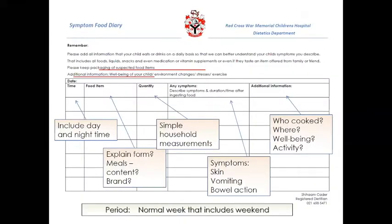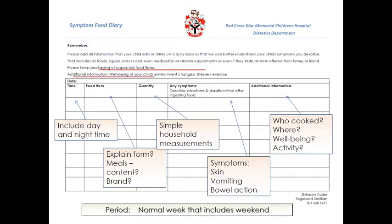An example symptom food diary records time — both day and night — the food consumed with detail on meal composition, brands (which play a huge part for different food types), quantity using simple measures like spoons or cups, symptoms in detail, and other factors such as who made the food and whether it happened at home or elsewhere, along with general well-being.